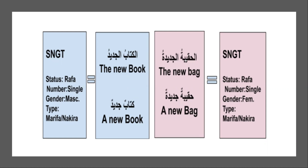Let's check the status. Haqibatu — ending sound u. Al-Jadidatu — ending sound u. So it's rafa status; both are rafa. Now number: Haqibatu — one. Jadidatu — one. So singular number. Now gender: we can see the sign of the feminine gender — the ta marbuta — so both are feminine. And then type: both start with al-, so both are marifa. All four properties are matching in Al-Haqibatul Jadidatul.